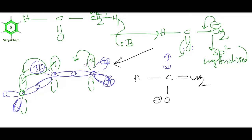It is very important: sometimes a carbanion is sp2 hybridized. When resonance is possible, the carbanion will be sp2 hybridized. Always keep this in mind.